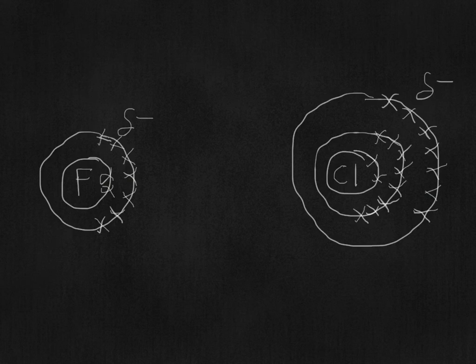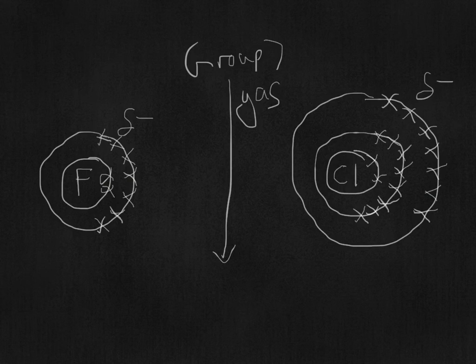Now if you keep going down the group, so you have group seven and you go down it, you start from the top with gases, and then as the van der Waals increase, so the van der Waals increase as you go down, you go from a gas to bromine, which is a liquid, and then as we get past bromine, you get to iodine and astatine, which are solids.